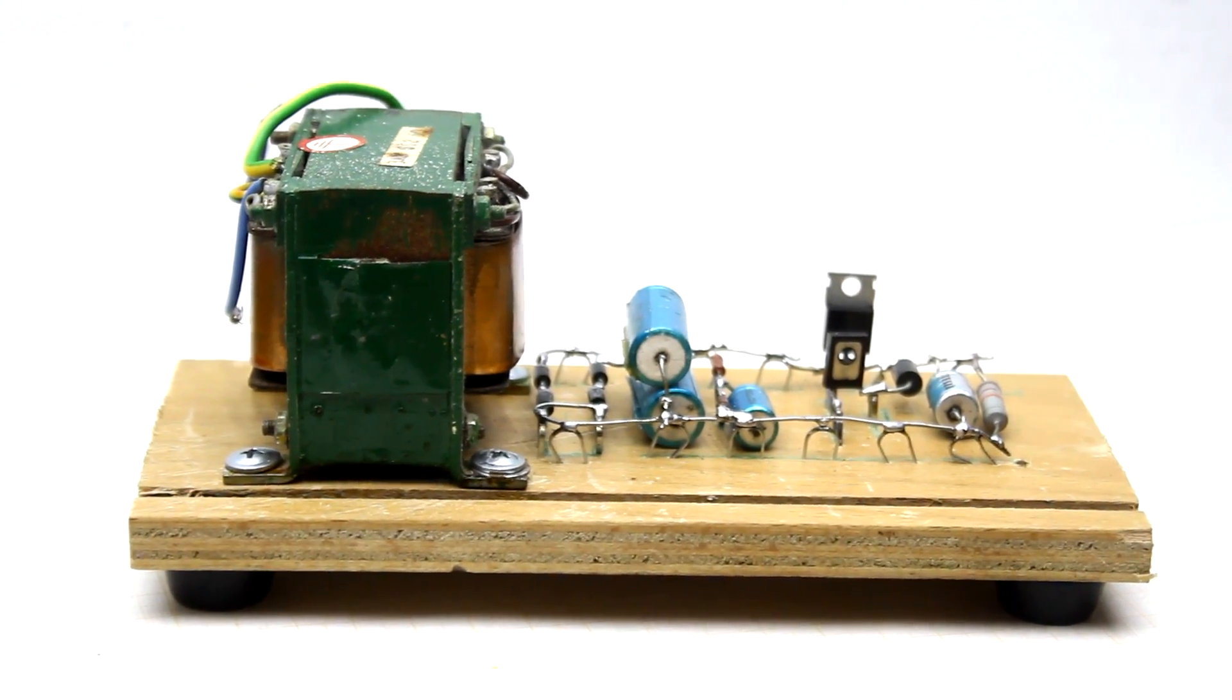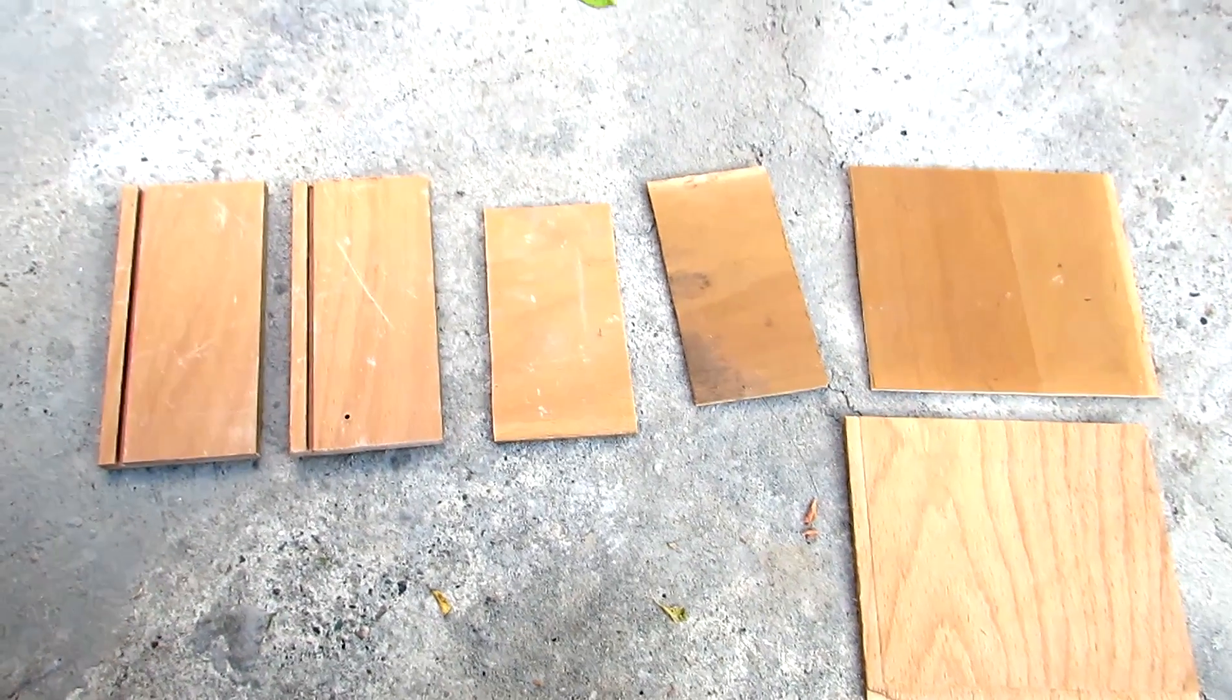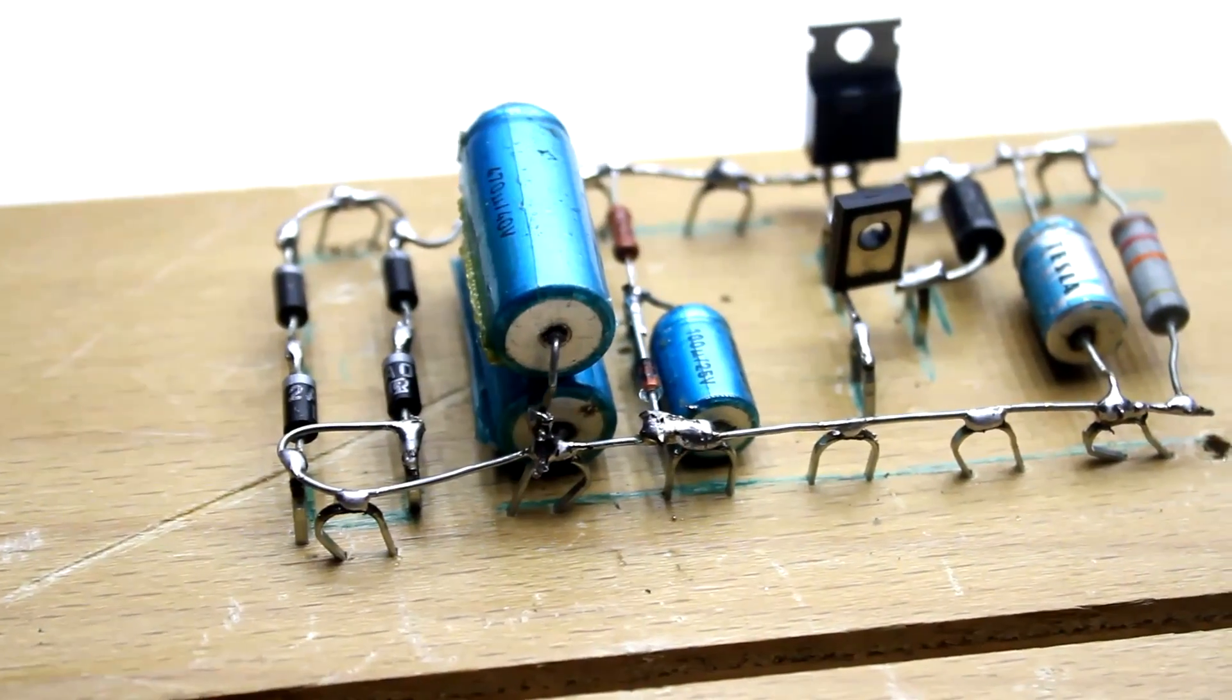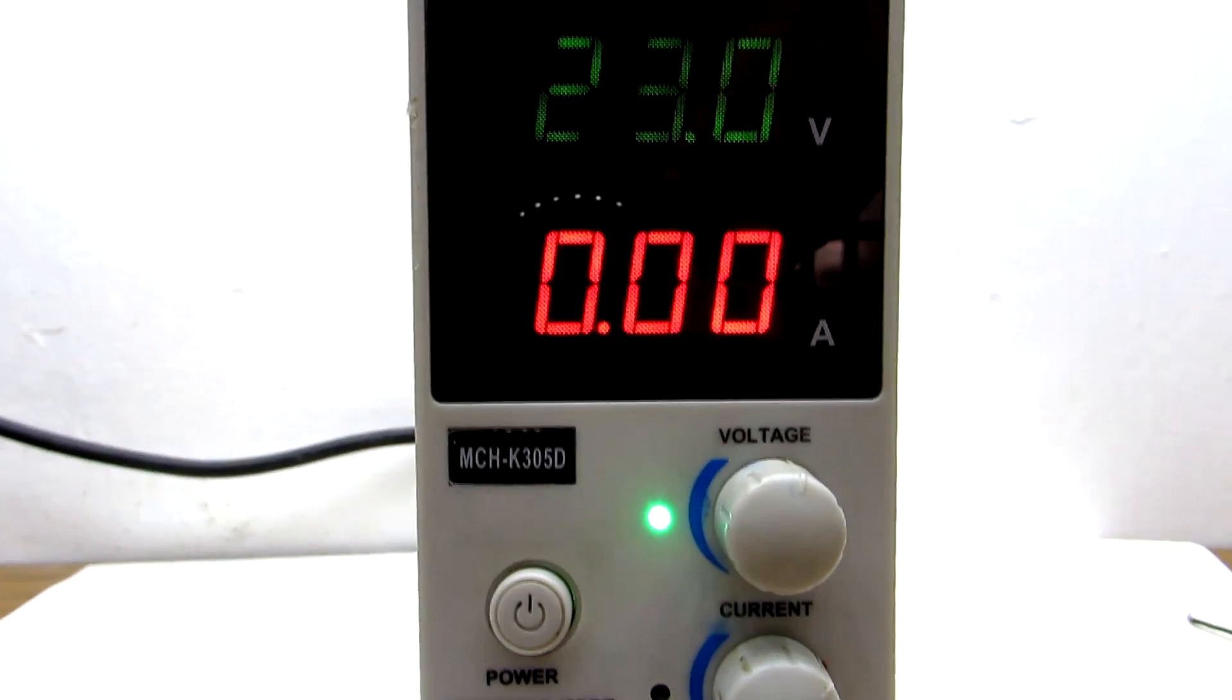Hi friend! I created this video especially for people who have just started to make their first steps in electronics. For any radio amateur, the main devices are a soldering iron, a multimeter, and of course a power supply unit.